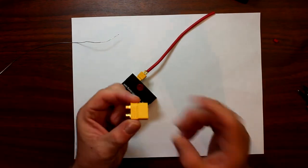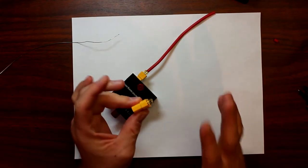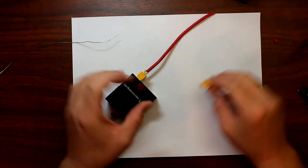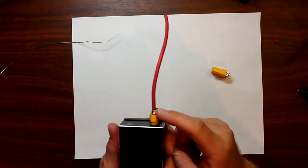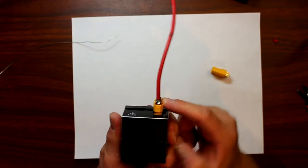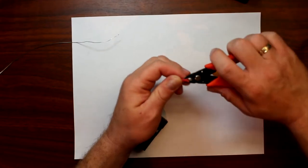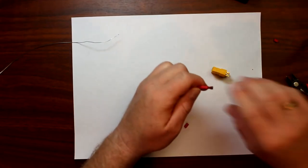Basically, you have your XT-90s here and what you need to do is tin the connector and your wire at the same time to achieve this kind of job here that's holding. What you're going to do is remove the shielding off your wire.